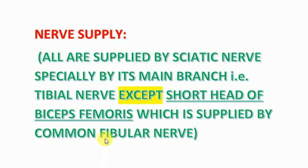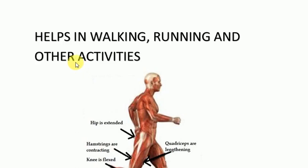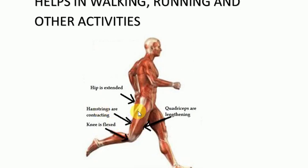The common fibular (common peroneal) nerve and the tibial nerve are both branches of the sciatic nerve. Regarding function, these muscles flex the knee joint and extend the thigh posteriorly. As shown by a person running, the knee is flexed and the thigh moves behind the body. So hamstrings are flexors at the knee joint and extensors at the hip joint.